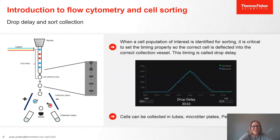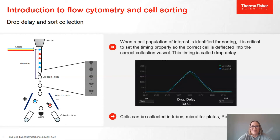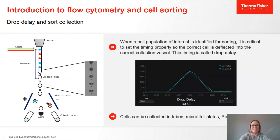Once we've calculated that timing, we apply a charge to the last attached droplet that we've accurately timed, let that droplet break off from the rest of the stream, and then it goes through electrostatic deflection plates. Negatively charged cells move toward the positive plate and positive cells toward the negative, directing them into whatever sort collection vessel is below. We also catch the waste, which can be decontaminated safely. Different instruments can sort at different speeds — some create 30,000 droplets per second, some 90,000 or 100,000 — which dictates how fast you can sort cells.